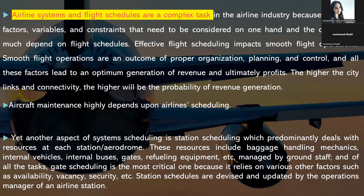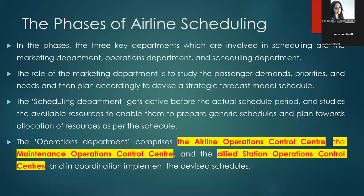Another aspect is station scheduling, which predominantly deals with resources at each station or aerodrome. These resources include baggage handling mechanisms, internal vehicles, internal buses, gates, and refueling equipment, managed by ground staff. Gate scheduling is the most critical, relying on factors such as availability of gates, security position at gates, and so on. Station schedules are devised and updated by the operations manager.